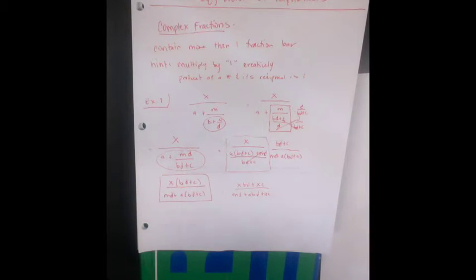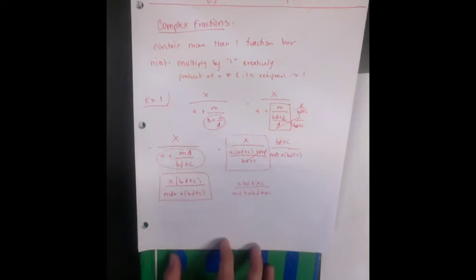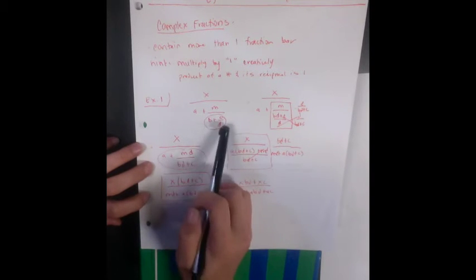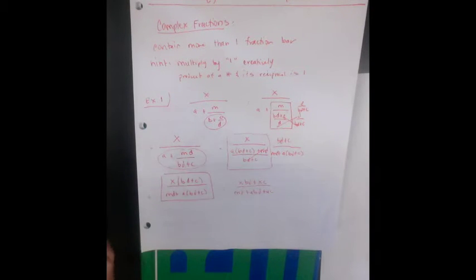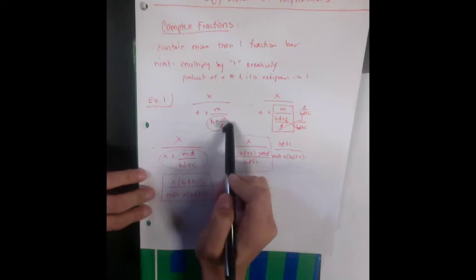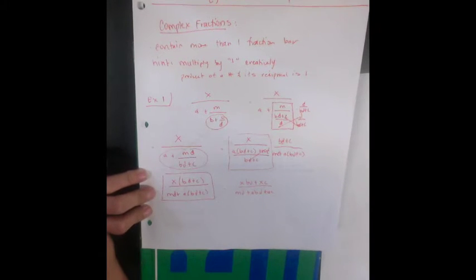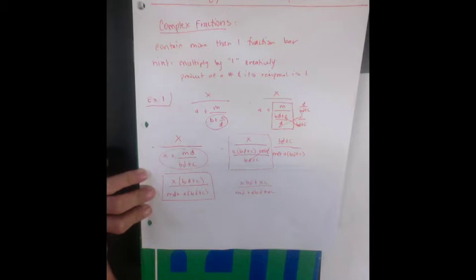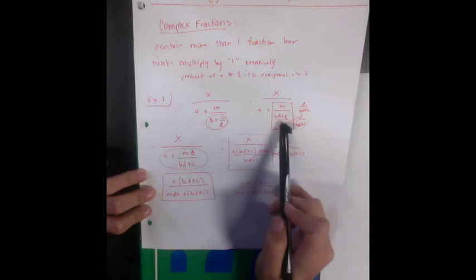So here's our whole first example. We have x over a plus m over b plus c over d. Now if we look at our bottom here, we want to combine these two into one fraction which gives me bd plus c over d.